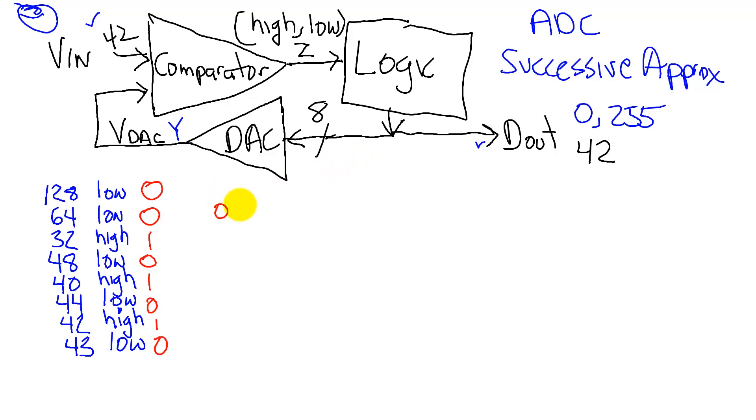So what you've done is in each guess, you're guessing one bit of the binary representation of the number. Absolutely. Starting with the most significant bit and winding down to the least significant bit.